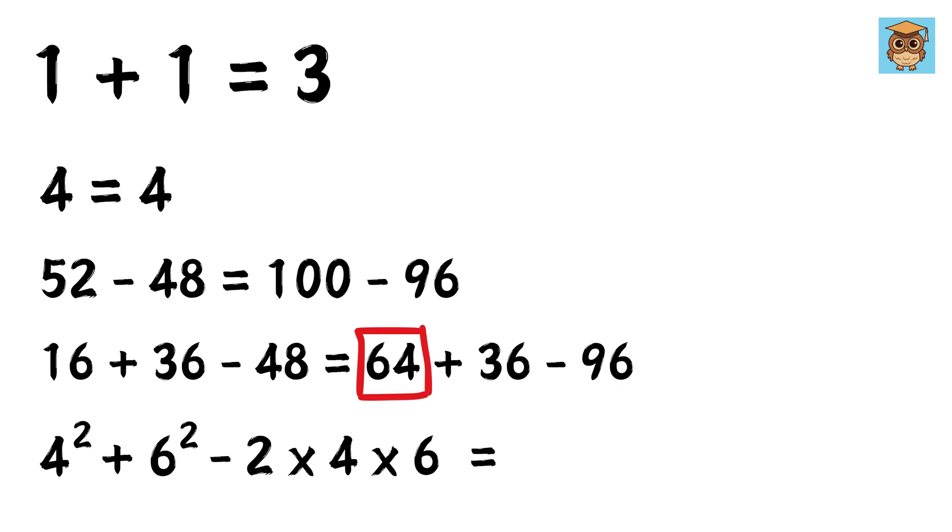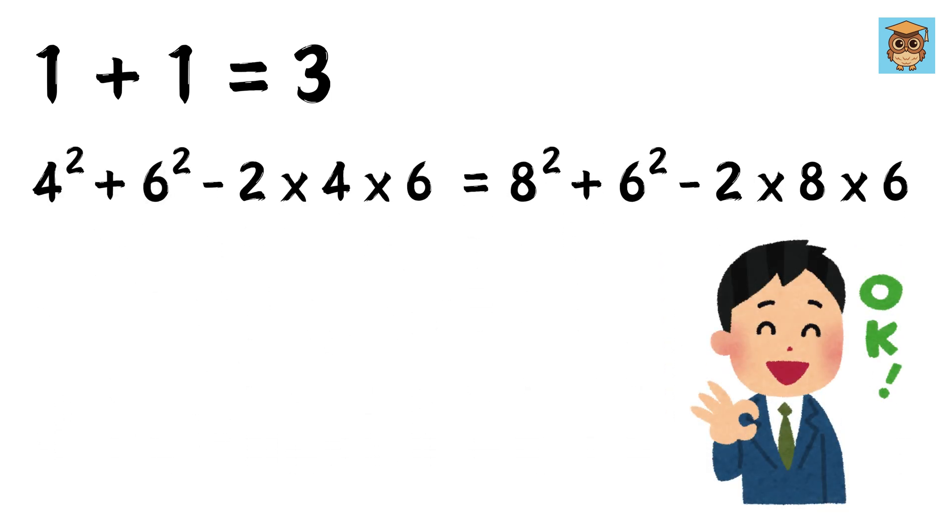Now we can also write this 64 as 8 square, then 36 as 6 square, and this 96 we can write as 2 times 8 times 6, right? This also looks fine.